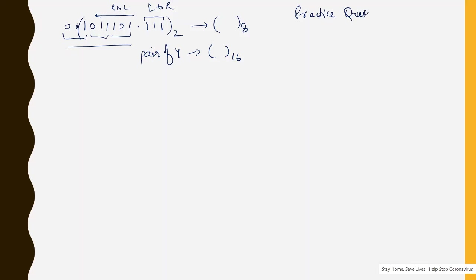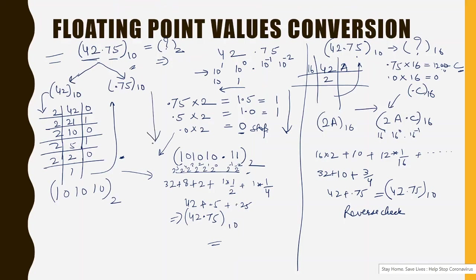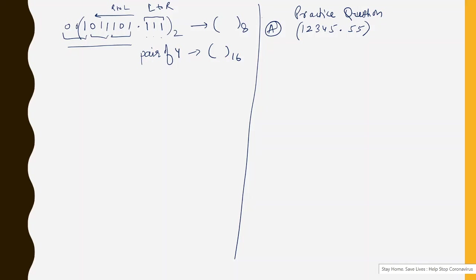Now here are some practice questions for you to solve, along with reverse checking. One important note: when converting fractional parts, the multiplication process may be infinite — a zero remainder may never occur. In such cases, stop after a specified number of digits to achieve the required accuracy. For example, if accuracy up to six digits is required, multiply only six times.